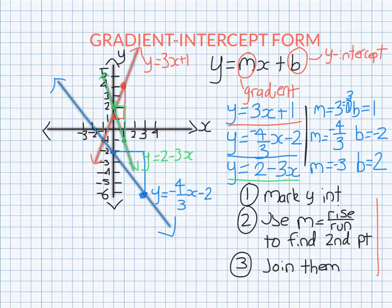So I need to make a point. Gradient intercept form means it's y equals something. Then and only then is the number in front of x the gradient and the other number the y-intercept. So if you have something like 2x minus 5y equals 10, that is not in gradient intercept form. You can't say the gradient's 2 and the y-intercept is 10 because it's not y equals something.